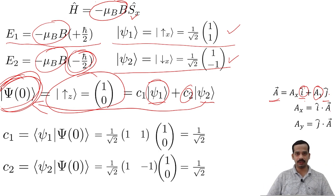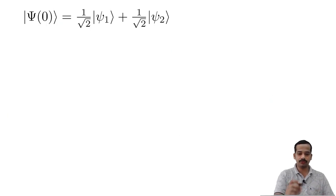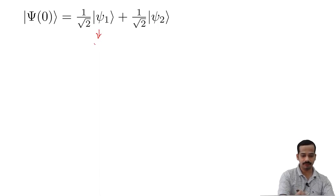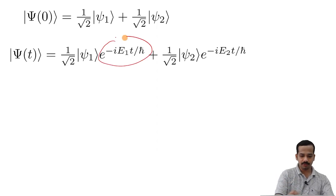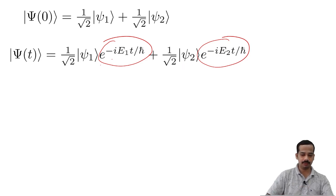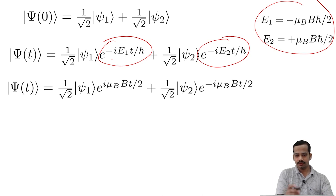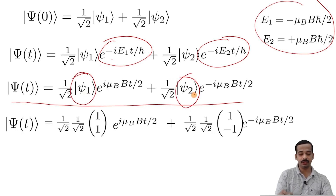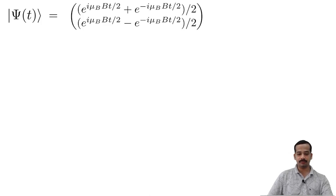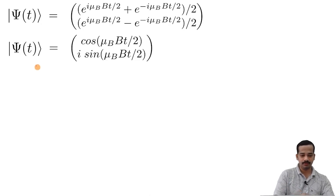Substituting, the state at t equal to 0 is (1 by root 2) psi-1 plus (1 by root 2) psi-2, where psi-1 corresponds to energy eigenvalue E1 and psi-2 corresponds to E2. The state at later time is obtained by multiplying e to the power minus i E1 t by h-bar with psi-1, and e to the power minus i E2 t by h-bar with psi-2. Substituting E1 and E2 and then substituting psi-1 (spin-up-x) and psi-2 (spin-down-x) and rewriting as a column vector, we get the state at later time equal to [cos(mu-B B t by 2), i sin(mu-B B t by 2)].